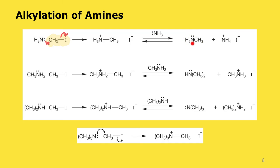Methylamine still has a non-bonded pair of electrons on nitrogen, so it can react with more methyl iodide by SN2, producing dimethylammonium iodide, which can be deprotonated to give dimethylamine. Dimethylamine is also a Lewis base and can do an SN2 itself, giving trimethylammonium iodide, which deprotonates to trimethylamine. Trimethylamine still has that non-bonded pair and can react one more time, but at that point we've reached a dead end — we form tetramethylammonium iodide, a stable salt that can be isolated.